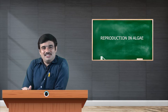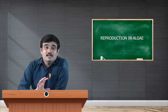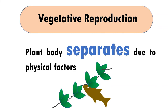What is vegetative reproduction? Here the plant body separates due to physical factors. What kind of physical factors may work here? Perhaps some fish bites, or any kind of organisms underwater biting that particular algae filament, or maybe the water currents. The increase and decrease in the speed of water currents can cause these separations. In the picture we have depicted a fish cutting the algae.